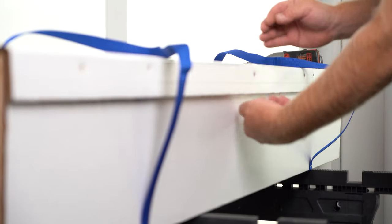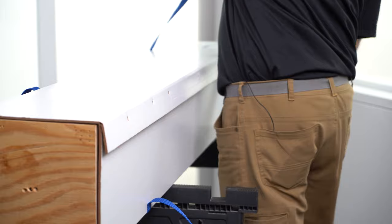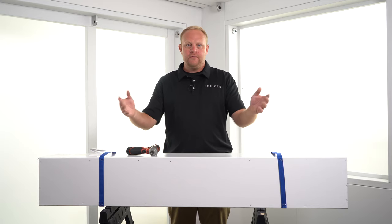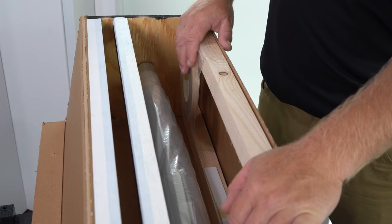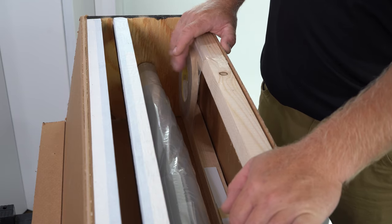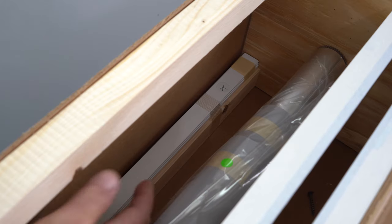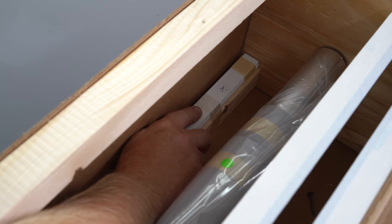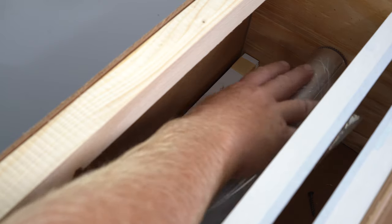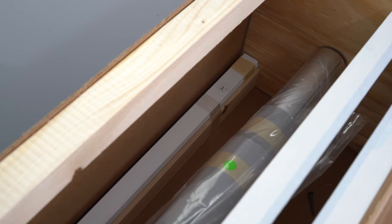Once you've removed all of the screws and taken off the strapping, then you can open your box and you'll have access to all the shades. Once you've opened the box, you'll see on one side you're going to have double-sided tape. You'll also find your hem bars strapped to one side, and then there will be a plastic sheathing on top of all of the fabric.